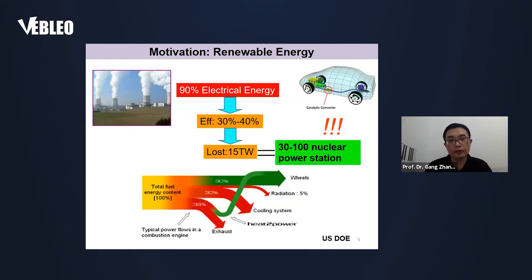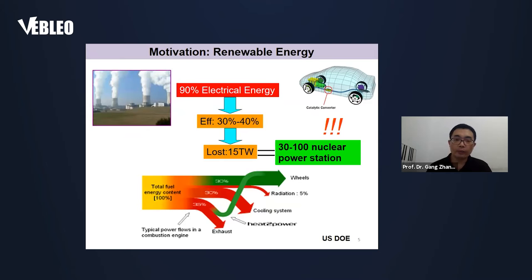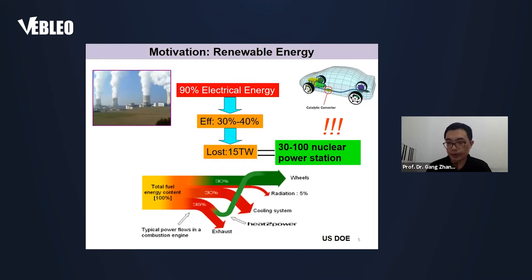The second motivation is for renewable energy. As we know, more than 90% of electrical energy in the world is generated by thermal power stations. However, the efficiency of thermal power stations is not high — only about 30 to 40%. So the total energy loss in the world is about 15.1 TW, which is a huge energy loss, equivalent to about 30 to 100 nuclear power stations. The situation is similar for cars, where the efficiency is also about 30 to 40%.